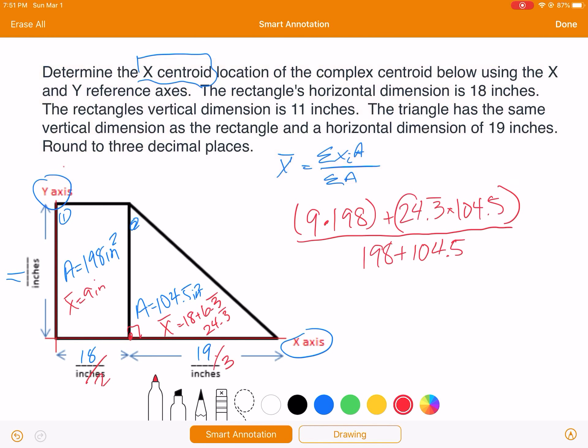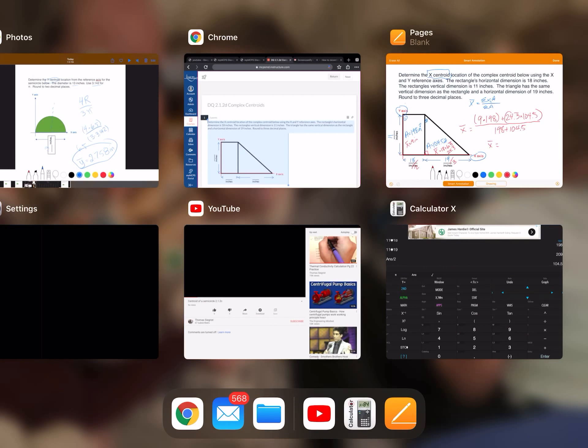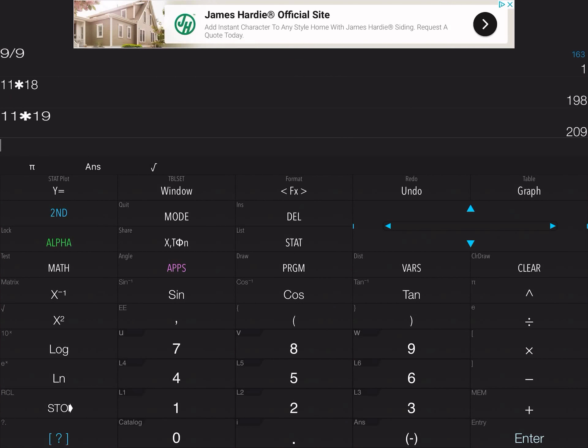So let's go ahead and put that in the calculator and see what we end up with, and that will be my x bar location for this complex centroid. Be careful, make sure you add that 18 inches because it's 18 inches over, and obviously this isn't drawn to scale. So 9 times 198 and 24.3 times 104.5.